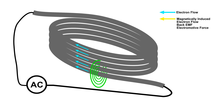Here is the start of it. And you can see that we've got current flowing in the direction of the current. But look at that magnetic field — it is cutting across several coils.